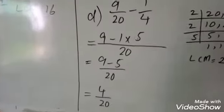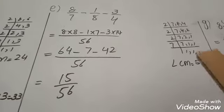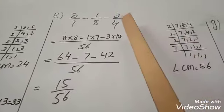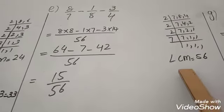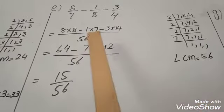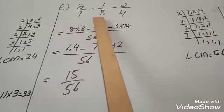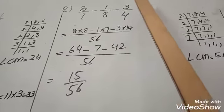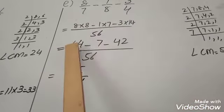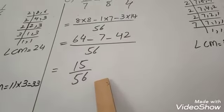D part and E part are also the same. E part has 3 fractions, so we take LCM of 7, 8, and 4. LCM is 56. Write 56. 7 times 8 is 56, so 8 times 8 is 64... 8 times 7 is 56, so multiply 1 by 7. Then 4 times 14 is 56, so multiply 3 by 14. Now we solve these values and the answer is 15/56.